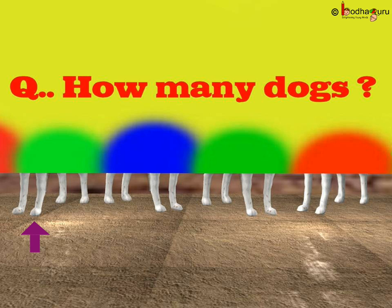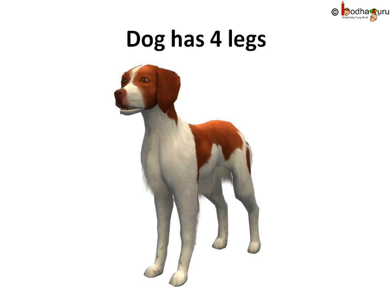1, 2, 3, 4, 5, 6, 7, 8, 9, 10, 11, 12, 13, 14, 15, 16. And how many legs does a dog have? It's 4.